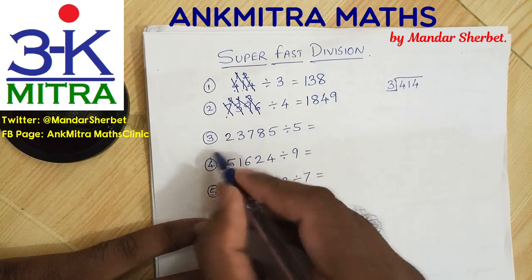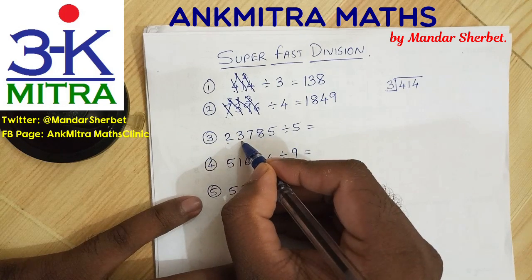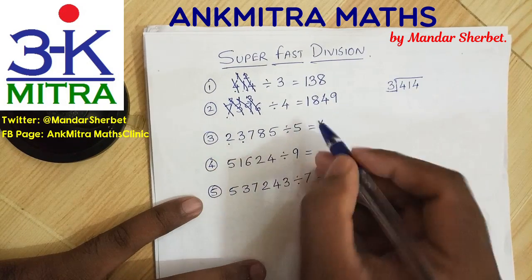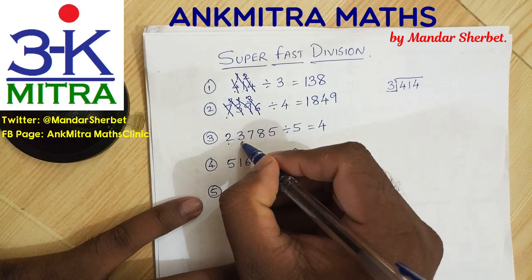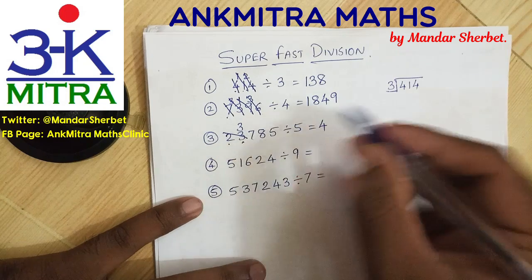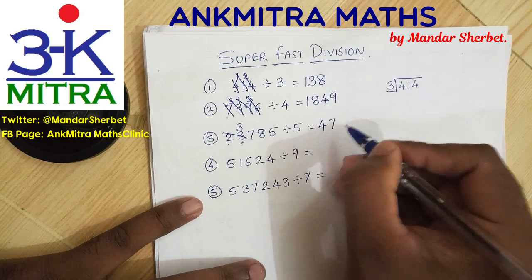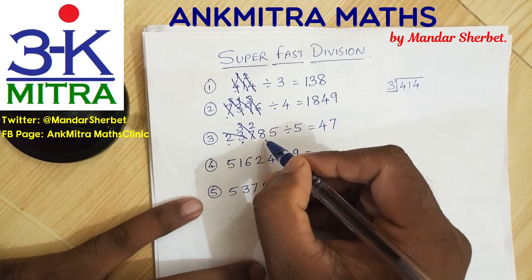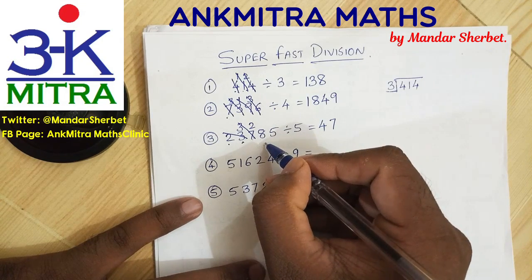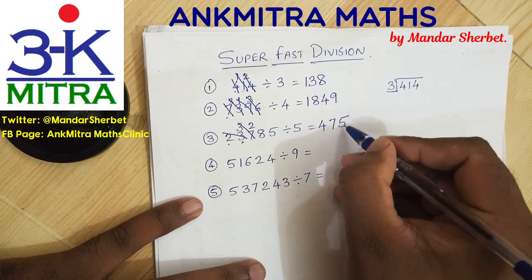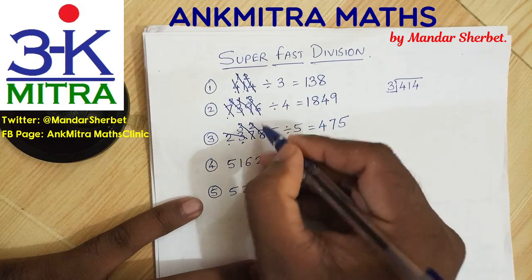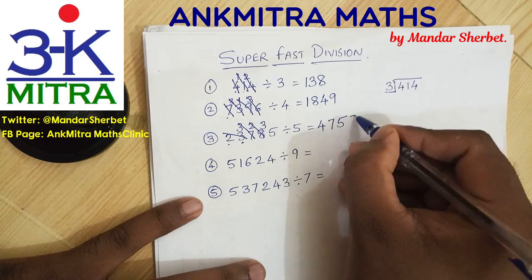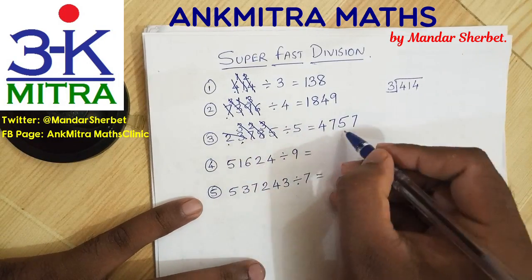Next example: 223785 divided by 5. Starting from the left, 2 is smaller than 5 so we consider 23. 4 times 5 can be subtracted — write down 4. Subtracting 20 from 23, what remains is 3. The next number is 37 — 7 times 5 is 35, subtracting gives remainder 2. Next number is 25 — subtracting 25 from 28 leaves 3. The final number is 35, which is 7 times 5, so we write down 7.